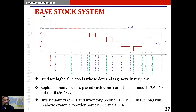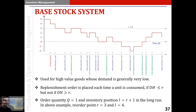Each time we place a replenishment order, the order quantity is equal to exactly 1, and the inventory position in the system is always the reorder point plus 1. In the above example, we will see that the reorder point r equals 3 and inventory position I equals 4.